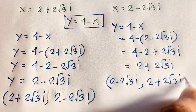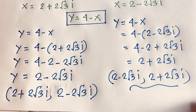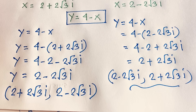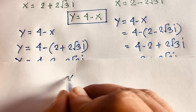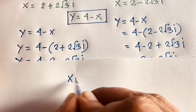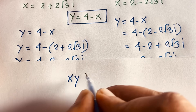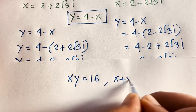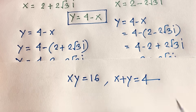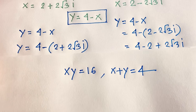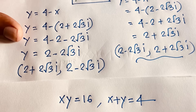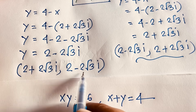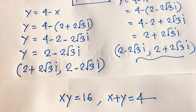This is our final answer to this Math Olympiad question. Let's check: our original equations are x plus y equals 4 and xy equals 16. We found x equals 2 plus 2√3i and y equals 2 minus 2√3i.